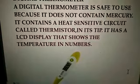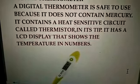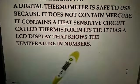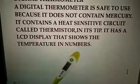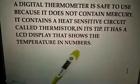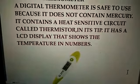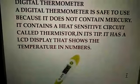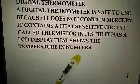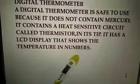This next picture is that of a digital thermometer. A digital thermometer is safe to use because it does not contain mercury. It contains a heat-sensitive circuit called thermistor in its tip. It has an LCD display that shows the temperature in numbers. These numbers can be in centigrade and also it can be in Fahrenheit.